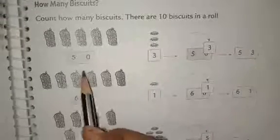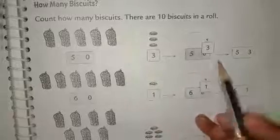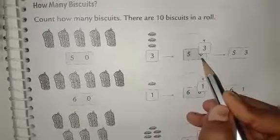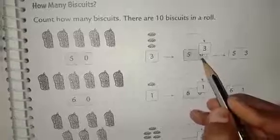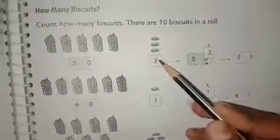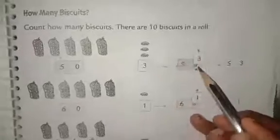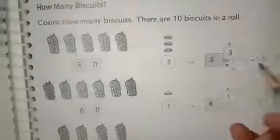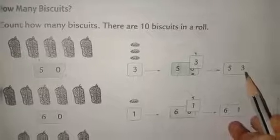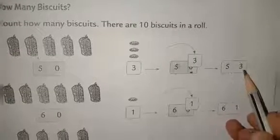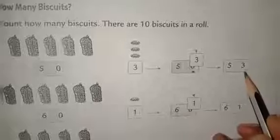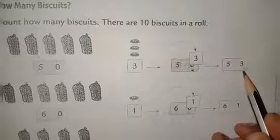If you have the number 50, the 1's place is 0, and the 3 is in the 1's place. So the number becomes 53. 53 means 5 tens and 3 ones, which gives us the number 53.